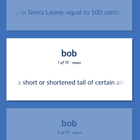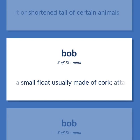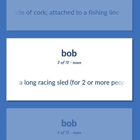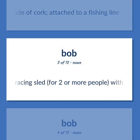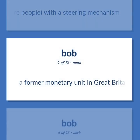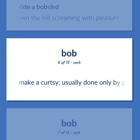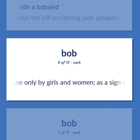A short or shortened tail of certain animals. A small float usually made of cork, attached to a fishing line. A long racing sled for two or more people, with a steering mechanism. A former monetary unit in Great Britain. Ride a bobsled — the boys bobbed down the hill screaming with pleasure. Make a curtsy, usually done only by girls and women, as a sign of respect.